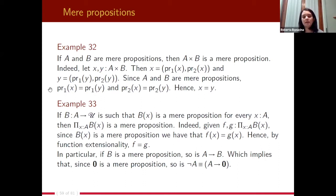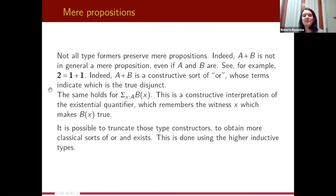In particular, if B is a mere proposition, so is A → B. This implies that not-A is always a mere proposition because 0 is a mere proposition and not-A is written as A → 0. However, not all type formers preserve the mere proposition property. The type 2 = 1 + 1 is not a mere proposition, so the co-product A + B is not, in general, a mere proposition even if A and B are.